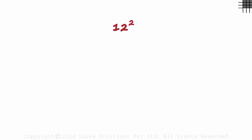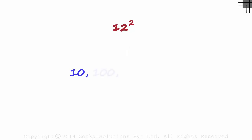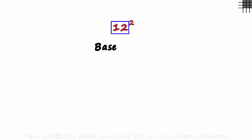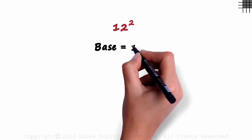The first thing we need to do is look at the number that is being squared — it's 12. The numbers we will be looking at squaring in this session will be close to some power of 10, meaning 10, 100, 1000 and so on. So while squaring such numbers, we first choose a base which is close to the number being squared, and the base will be some power of 10. Here, 12 is close to 10, so let 10 be the base.